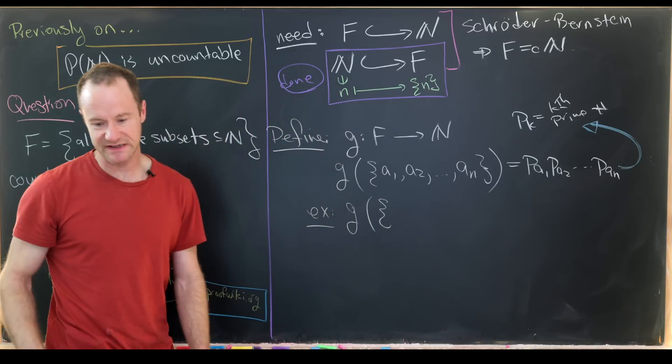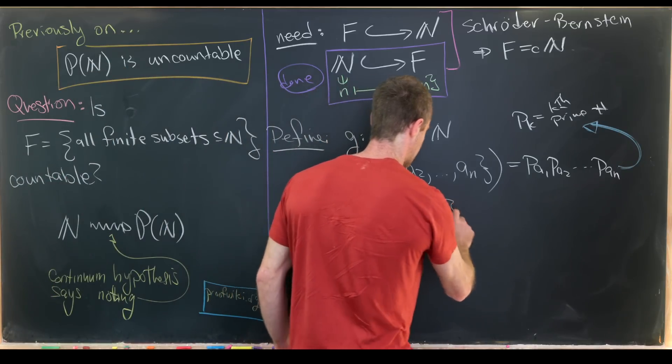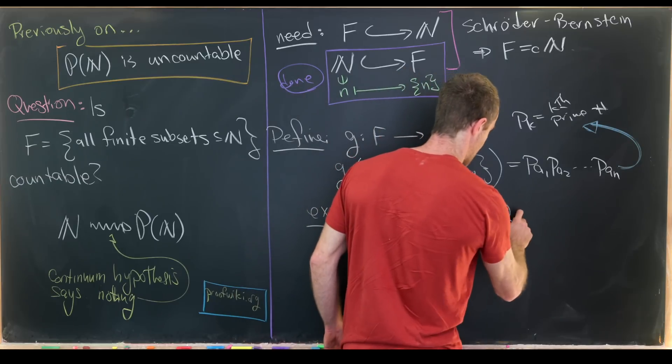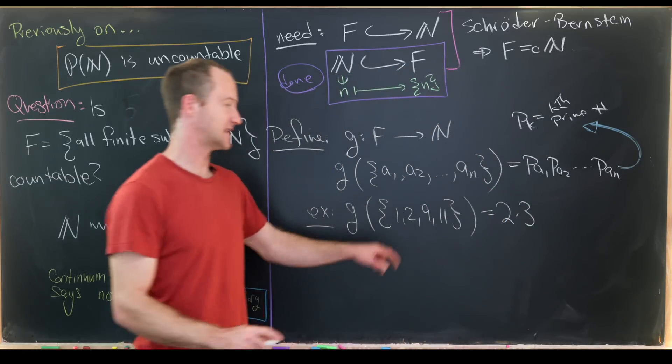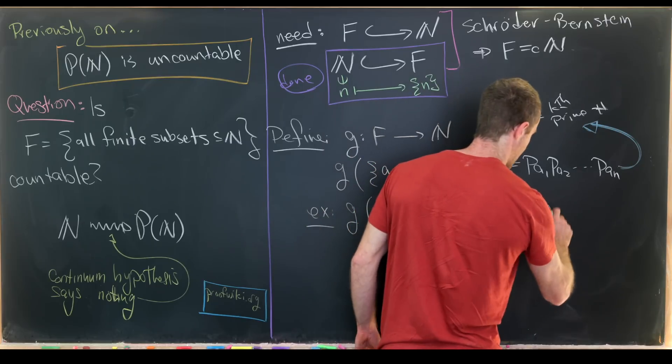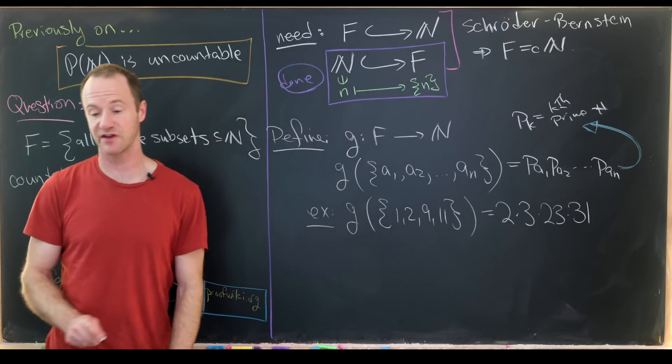Let's take the set {1, 2, 9, 11}. Notice that this gets mapped to the first prime, which is 2, times the second prime, which is 3, times the ninth prime, which is 23, times the eleventh prime, which is 31.